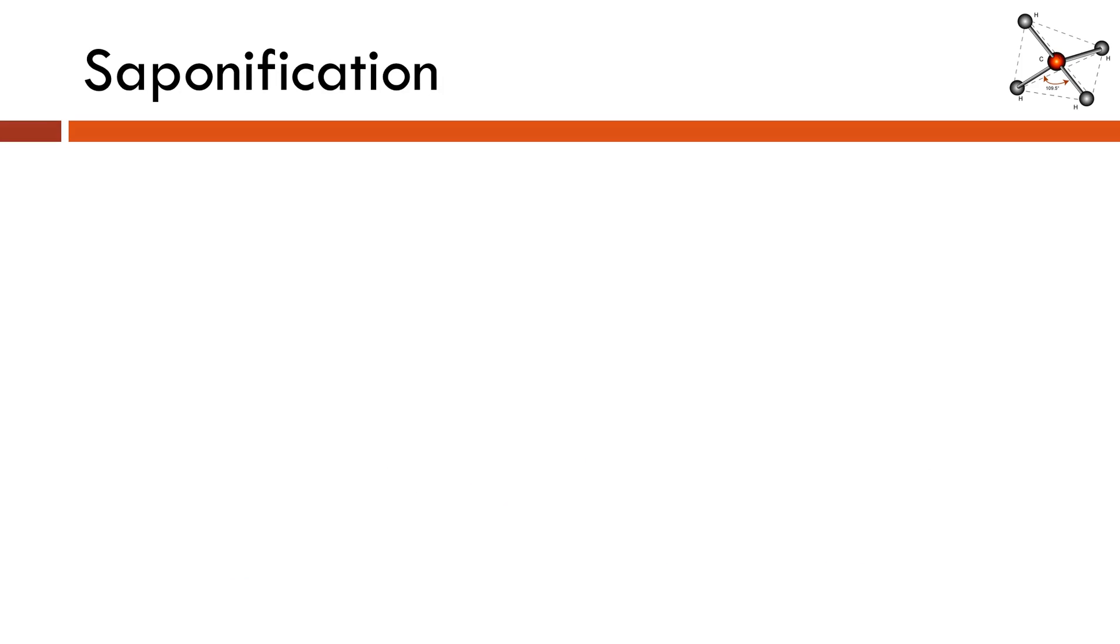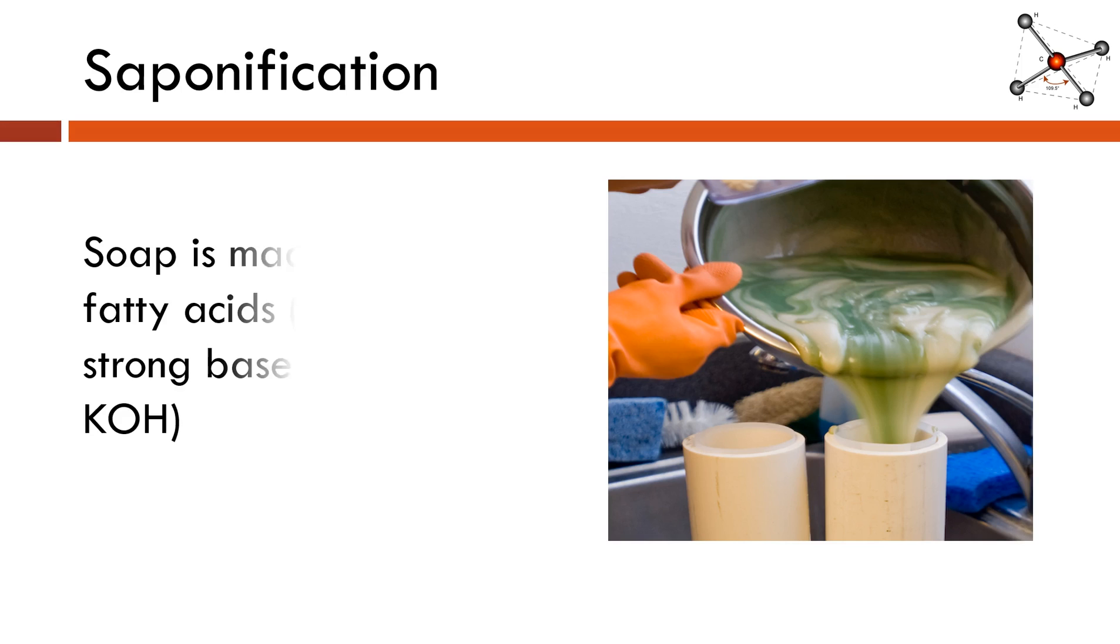Alright, the last one we're going to talk about today is saponification. If you rearrange the first four letters of this reaction name, you can figure out what one of the products is going to be. Yeah, this is how you make soap. Another pretty disgusting process when you get down to it. In saponification, we're going to take fatty acids or just fats and we're going to react them with a very strong, very concentrated base. Something like sodium hydroxide or potassium hydroxide. Yeah, you can take things like bacon grease, for example, vegetable oil, coconut oil, something like that. And if you react it with a strong base, you can make yourself a very crude soap.